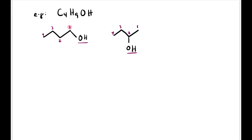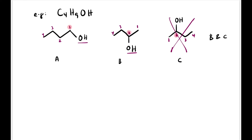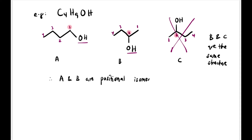In the second structure with 4 carbons numbered 1, 2, 3, 4, the OH is at carbon 2 — we've changed the position of the functional group. For the third structure, numbering gives OH still at carbon 2, so the second and third structures are actually the same. Therefore, only structures A and B are positional isomers, because we've changed the position of the functional group.